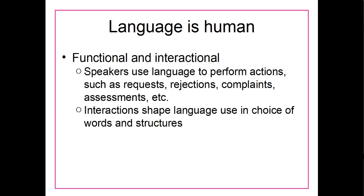Language is functional in that we can use it to perform specific actions. Language is also interactional in that the interactions we're in can shape language — we choose different words and different linguistic structures depending on how the interaction is going. For example, if I'm talking to my grandmother, I might use a completely different set of vocabulary than if I'm talking to a friend at a New Year's party. When talking to my grandmother I might speak more formally, when talking to a friend more informally.